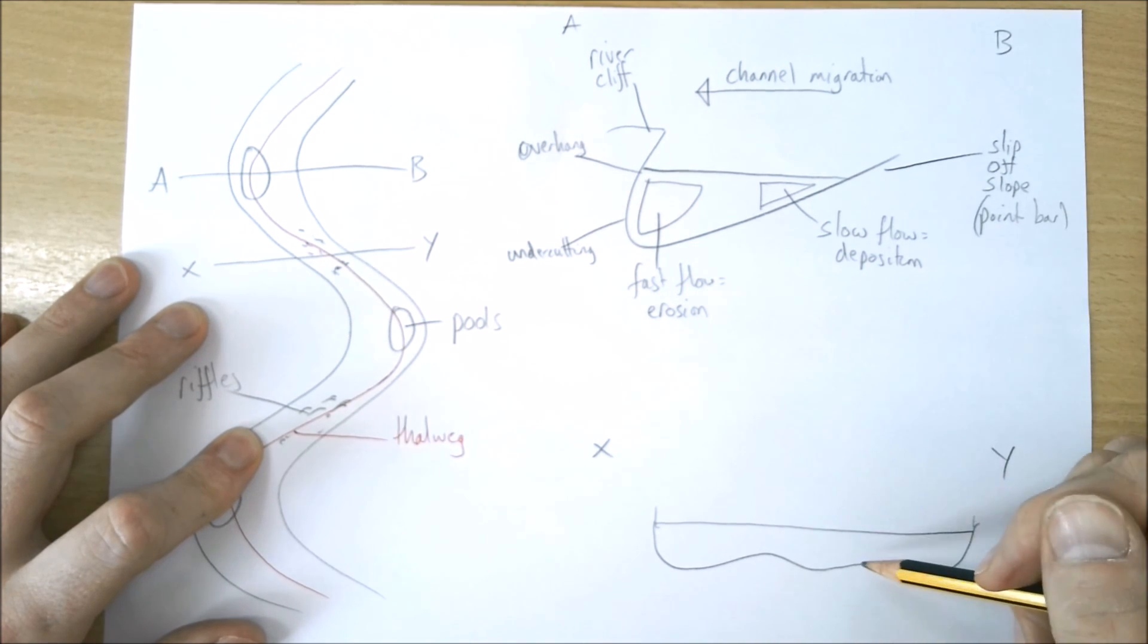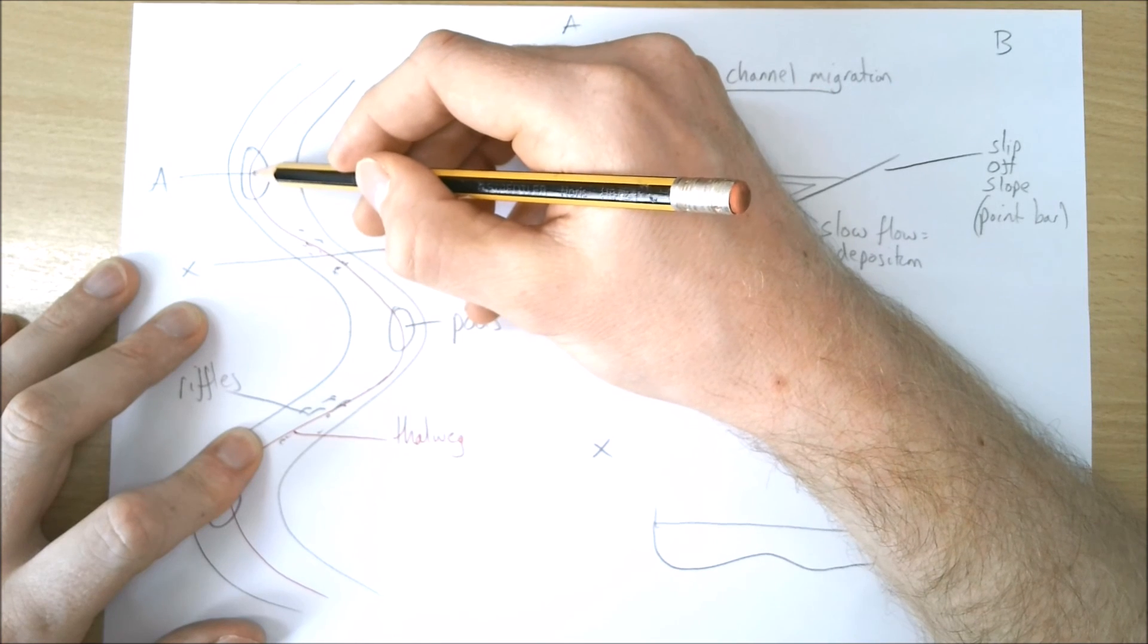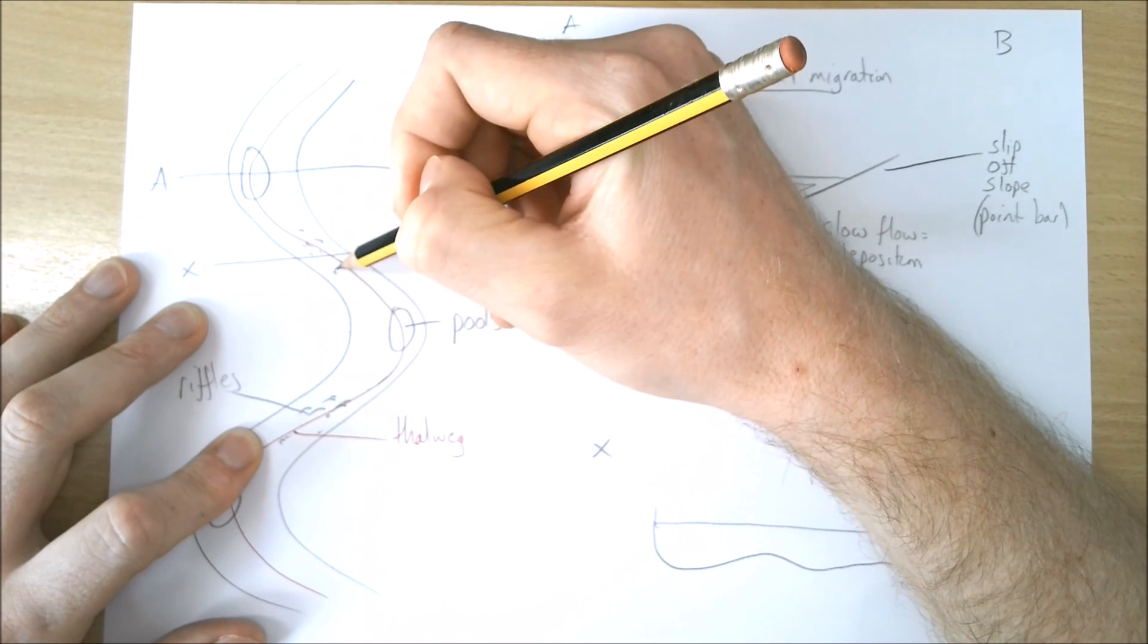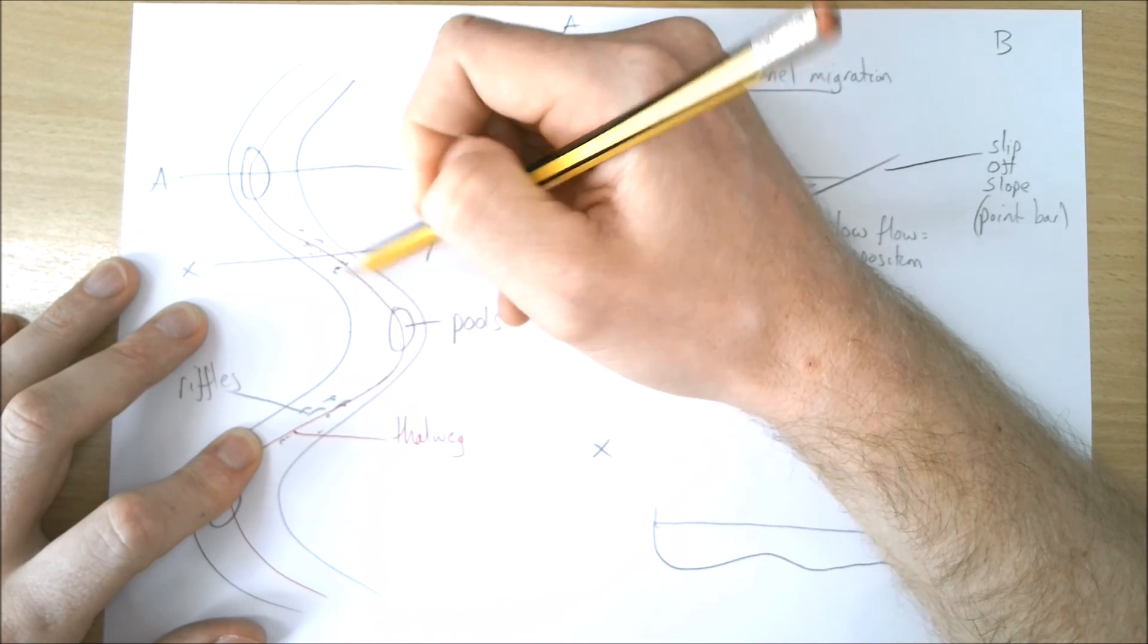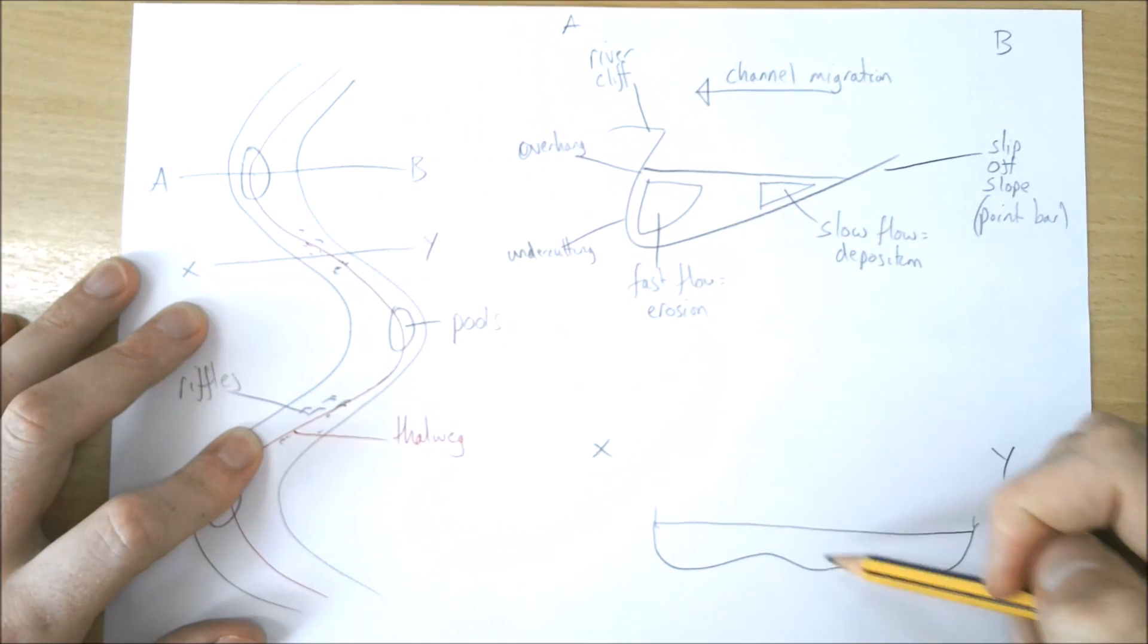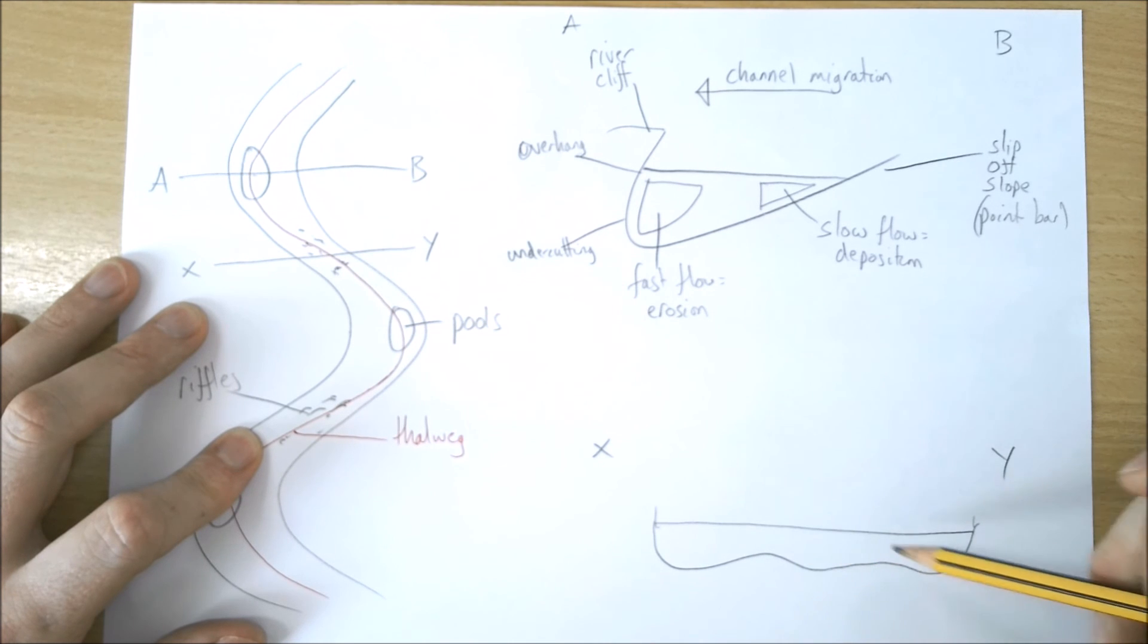Because the river is less efficient here, we've got the deep water of the pools with fast flow, but it's moving to the next meander. So the water isn't going to be as deep or as fast. Following the principles of the Hjulström curve, we're going to have deposition.